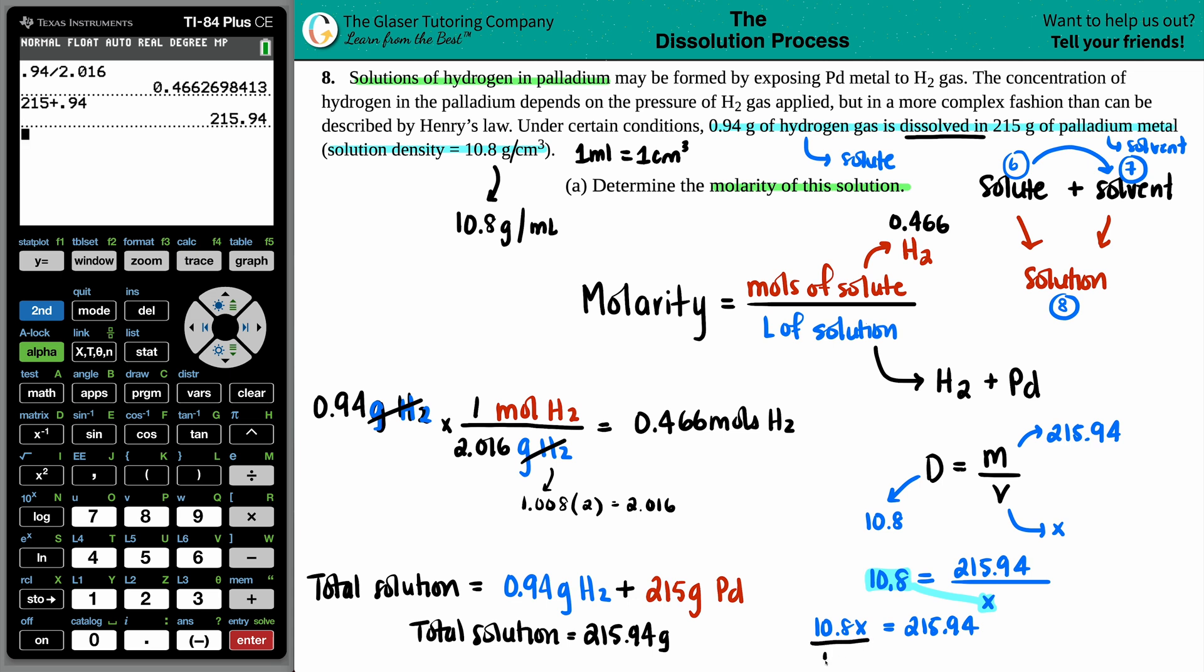This number divided by 10.8, the density, and I get x equals 19.99. But what unit is this? It has to be the unit of the volume in the density, which is milliliters. But we need liters for the solution. I can quickly go from milliliters to liters by dividing by 1,000, or move the decimal over three times to the left. So this would be 0.01999 liters. Now we know the bottom number is 0.01999 liters.